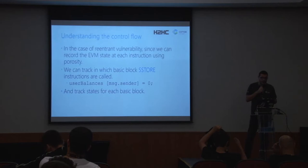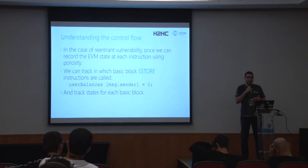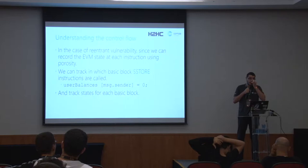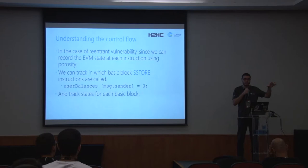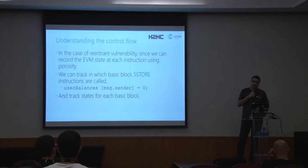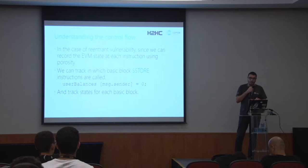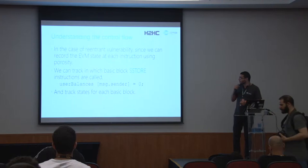To understand what a re-entrant vulnerability is, at least from our tool's perspective, we need to keep track of each state of each basic block. What we do internally is: if we see we're dependent on a function which is not locally stored in the contract but in another contract, we just mark it as potentially unsafe. And if the following basic block contains an operation on the persistent memory — which we can recognize with the SSTORE instruction — we mark it as unsafe.